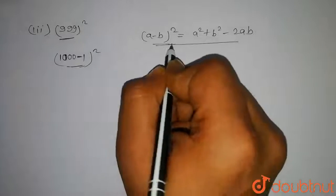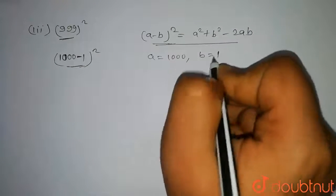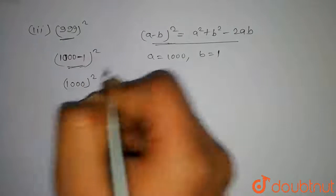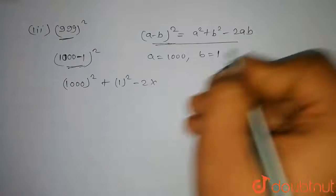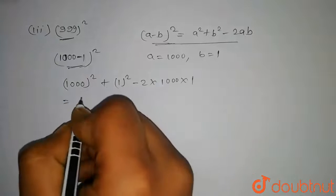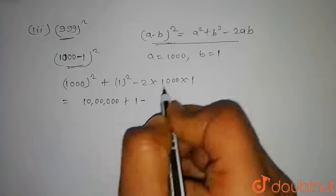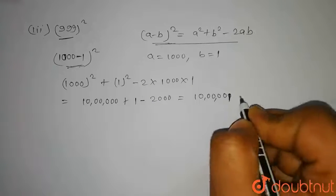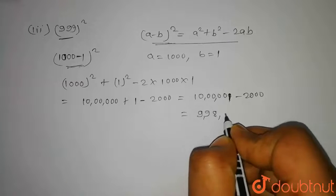On comparing with the identity, we have a = 1000 and b = 1. We can write this as 1000² + 1² − 2 × 1000 × 1. So on solving this we get 1,000,000 + 1 − 2000, that is equal to 998,001.